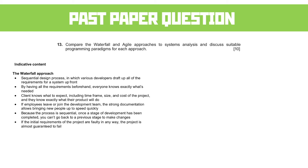If the initial requirements of the project are faulty, the project is almost guaranteed to fail — in fact, most software failures you hear about in the press tend to be based on the waterfall model. The product is only tested as a whole when it's completed; if bugs were introduced early, a large amount of code will be affected. Units themselves would be tested by programmers in unit testing, but issues affecting massive amounts of code can be noticed right at the end, which is highly problematic.